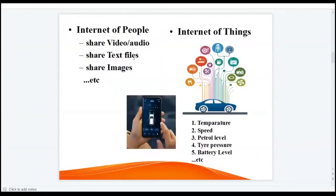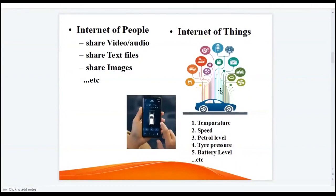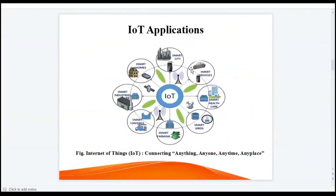By using the internet we share audio, video files, text files, and images. But in Internet of Things, for example as shown here, there are two things: one is a car which is internet-enabled, and another is a mobile phone which is also internet-enabled. The car shares different parameters with the cell phone, such as temperature of the car, speed, petrol level, tire pressure, battery level, etc. This is an example where two internet-enabled things — a car and a cell phone — share different parameters.